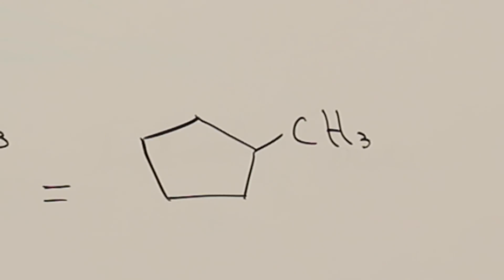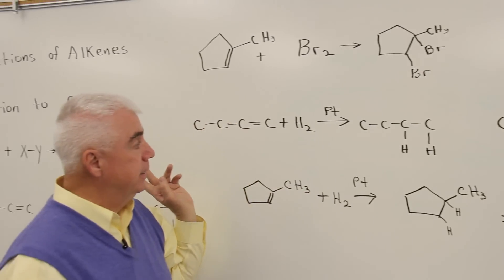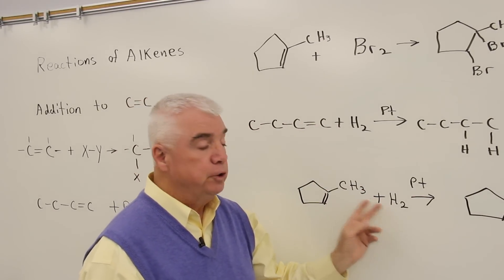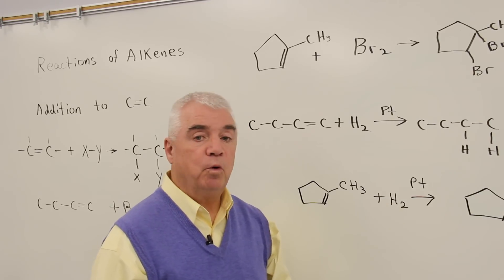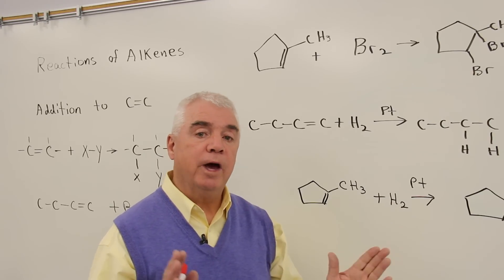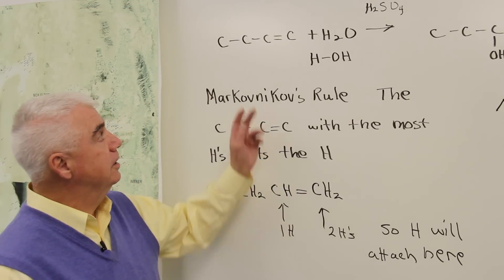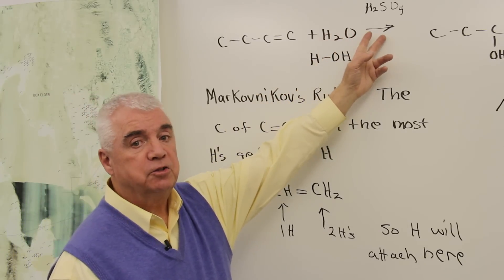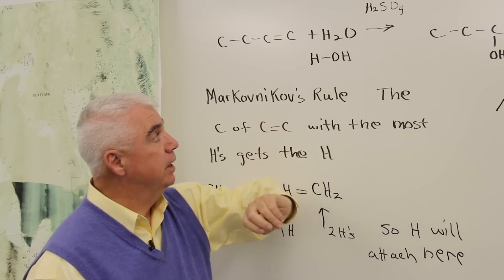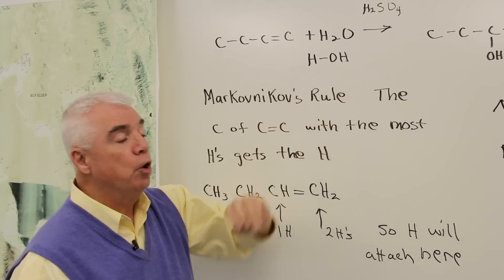Let's look at an addition reaction now that's a little bit unlike bromine and hydrogen, where the two halves of the reagent are the same. This next example will have a reagent where the two halves are different. A molecule of water can add to a carbon-carbon double bond if we use a catalyst like sulfuric acid. In this case, the reagent has two different parts, an H and an OH.